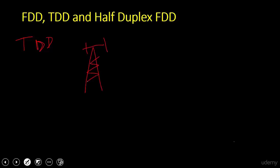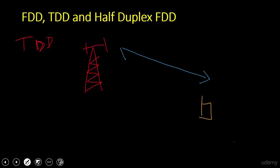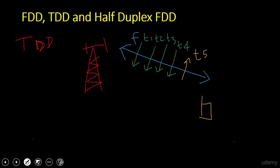Now let's talk about TDD. In TDD you have an unpaired spectrum at frequency F. In this unpaired spectrum you can have both uplink and downlink on the same spectrum at different times. The spectrum is divided into time slots — at times T1 through T4 you can have downlink, and at times T5 and T6 you can have uplink.